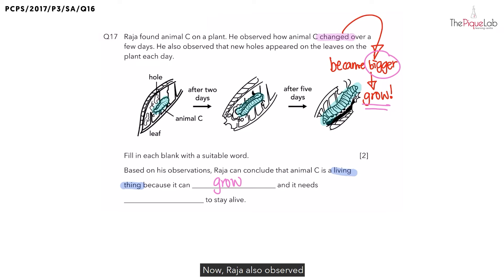Now, Raja also observed that there are new holes appearing on the leaves on the plant each day. Why do you think there are new holes appearing on the leaves each day? Is it because animal C wants to make a tunnel so it dug a hole on the leaves? No, right? So why do you think more and more of the leaves disappeared over the next few days?